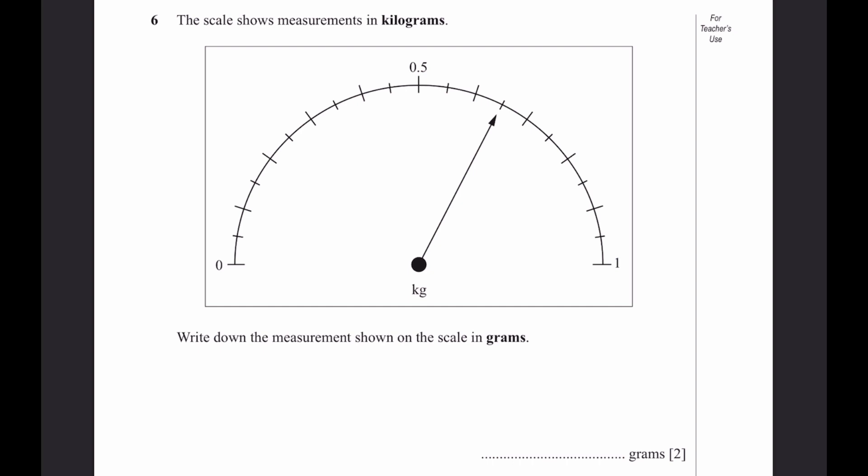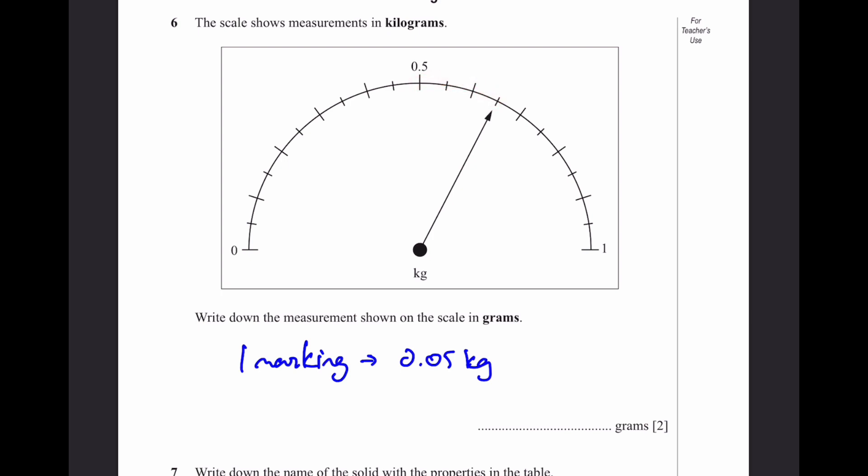Question 6. The scale shows measurements in kilograms. Write down the measurements shown on the scale in grams. First, we need to find how much this is in kilograms. From 0 to 0.5, there are 10 markings. That means one marking is an increase of 0.05 kg, because it's 0.5 divided by 10. We're going 3 markings more than 0.5, which equals 0.05 into 3, which is 0.15. The scale value equals 0.5 plus 0.15, which is 0.65 kilograms, and that's equal to 650 grams. That's the answer.